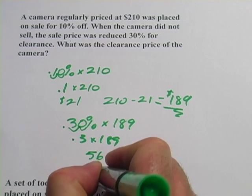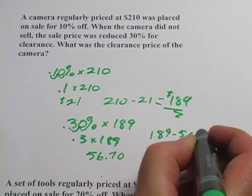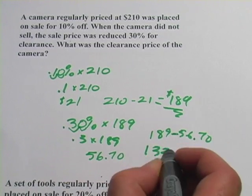That's what we're taking off. So we subtract that, 189 minus 56.70, and that comes out to $132.30.